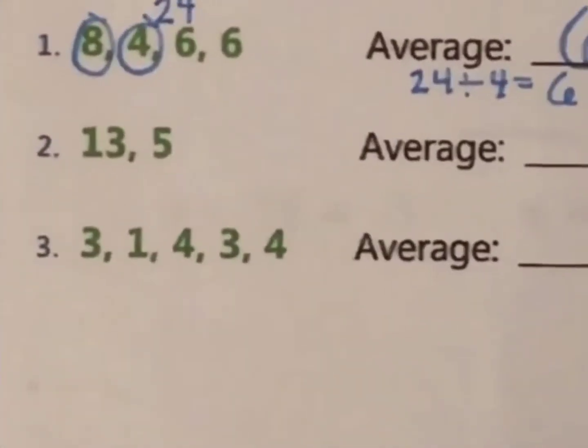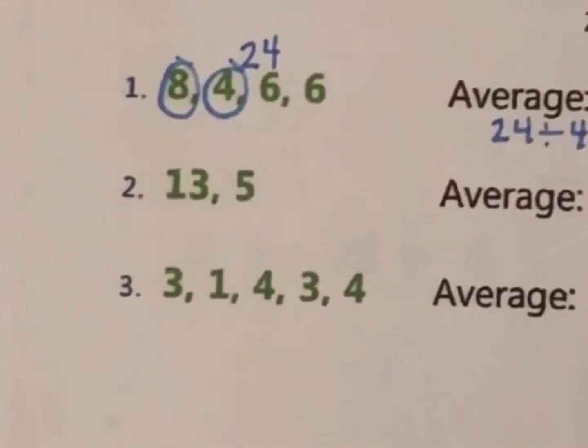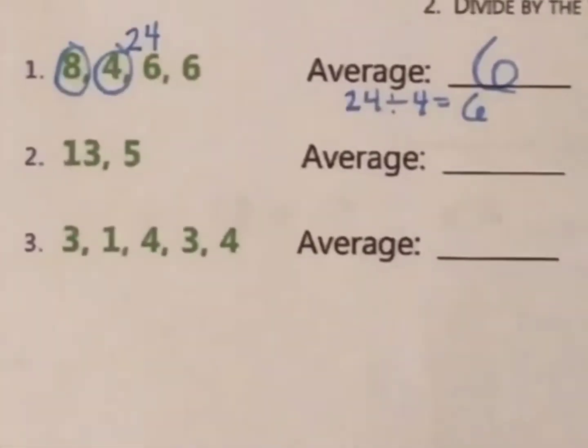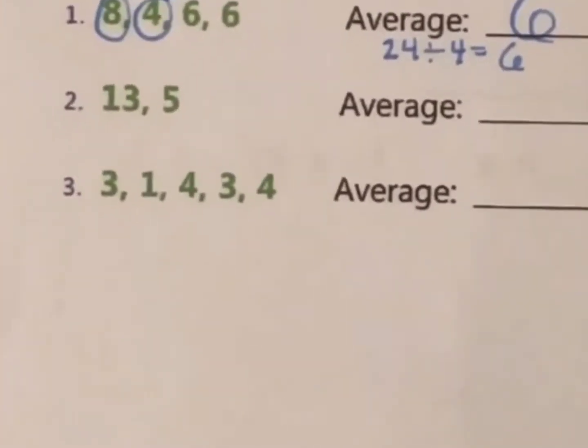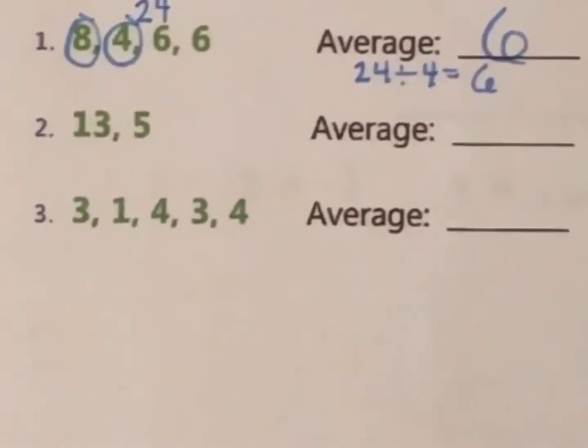So now go on to the next two and solve them. Obviously, for number 2, you have two numbers, so when you add them up and divide, you'll divide by 2 to find the average. And for number 3, you have 1, 2, 3, 4, 5 numbers. So, you'll add those up and then divide by 5 to find the average.